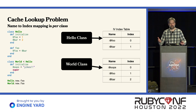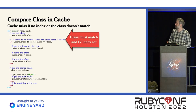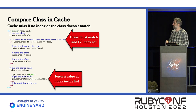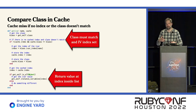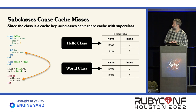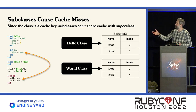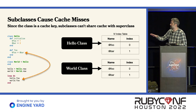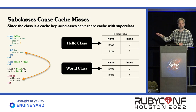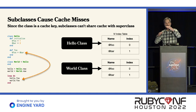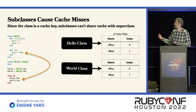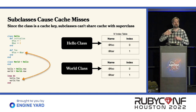We can fix this problem — we just use the class as a cache key as well. We say the class needs to match, we need to have an index, and then we can finally use that. Now our instruction is getting a little more complicated. But there's another problem: let's say we have an empty World class that just inherits from Hello with no changes. Since class is now part of the cache key, this loop oscillating between instances — calling foo on Hello, then foo on World — means we can never hit the cache. We always look up Hello, then look up World, and we're always missing the cache.